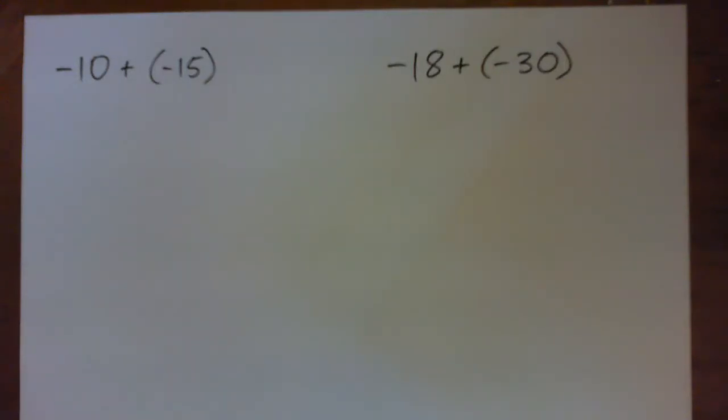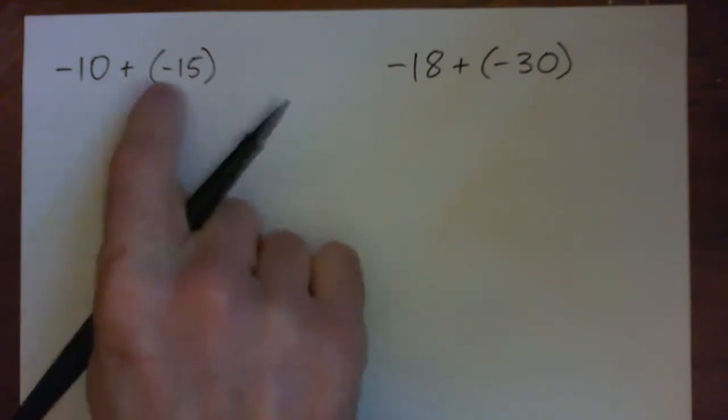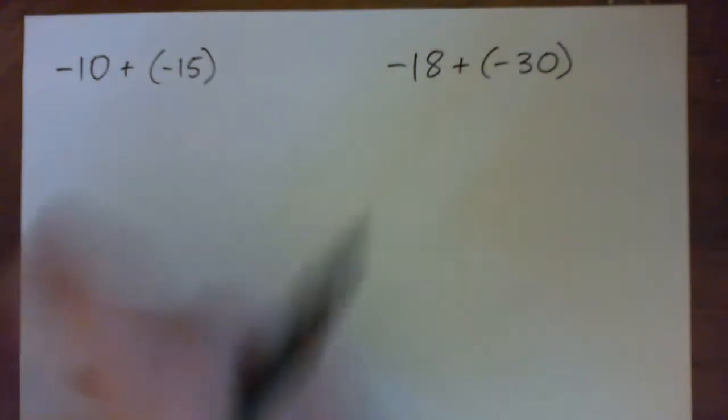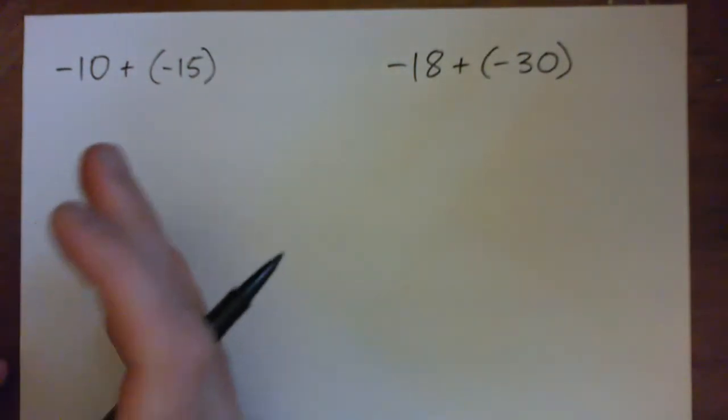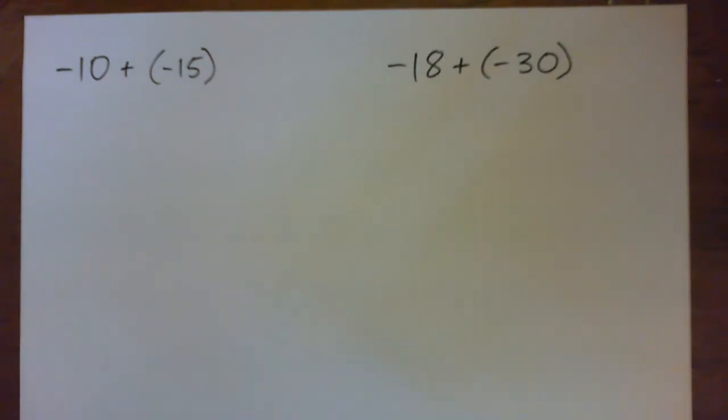Alright, let's do these problems here. Negative 10 plus negative 15. So that's kind of like 10 bad guys plus 15 bad guys. It's a whole lot of bad guys.